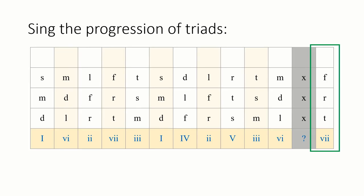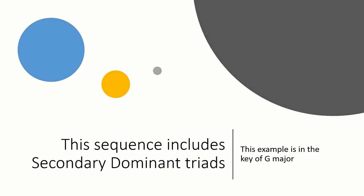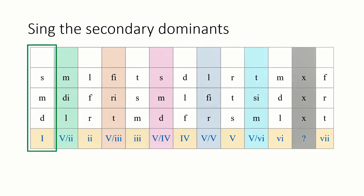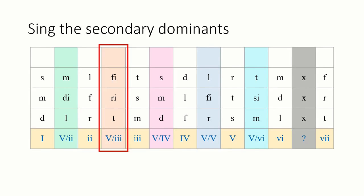Do. The second sequence includes the secondary dominant triads. Do mi sol mi do, one major. La di mi di la, five of two. Re fa la fa re, two minor. Ti re fi re ti, five of three. Mi sol ti sol mi, three minor.